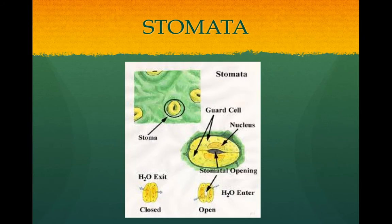Leaves have stomata, which are tiny pores in the epidermis. They are surrounded by guard cells, which regulate the opening of the stomata.